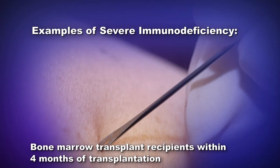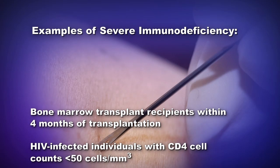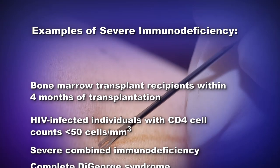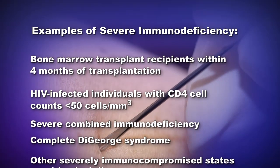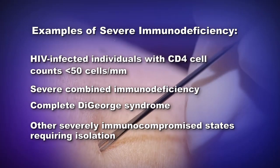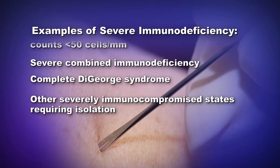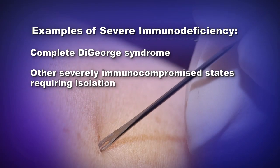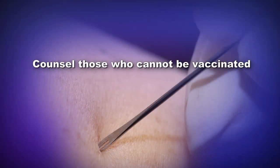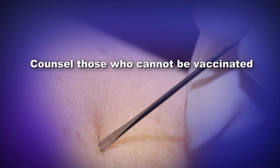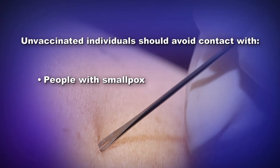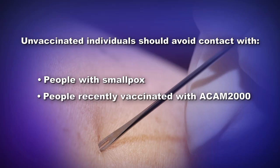These individuals include bone marrow transplant recipients within four months of transplantation; persons infected with HIV with CD4 cell counts less than 50 cells per cubic millimeter; and persons with severe combined immunodeficiency, complete DiGeorge syndrome, and other severely immunocompromised states requiring isolation. Of note, CD4 cell counts should be adjusted for children less than 13 years old. Instead, these individuals should be given clear information about the signs and symptoms of smallpox for self-assessment, provided with specific information on when and where to seek care if symptoms occur, and advised to avoid contact with individuals with smallpox and those recently vaccinated with ACAM2000.